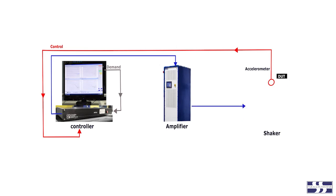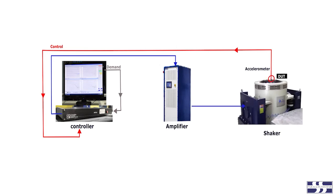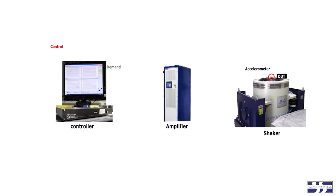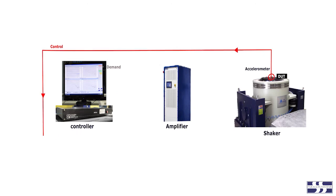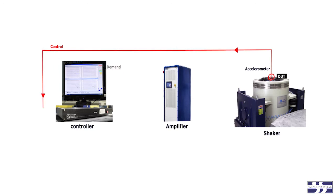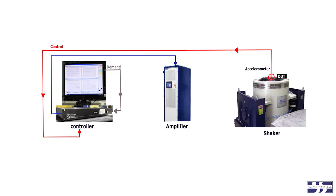The amplifier output drives the mechanical movement of the armature, which is sensed by the accelerometer. The controller compares the new accelerometer signal to the test profile and continues to adjust the amplifier drive signal in a closed loop until the accelerometer signal matches the test profile. This control loop cycle can occur at up to 50 kHz.